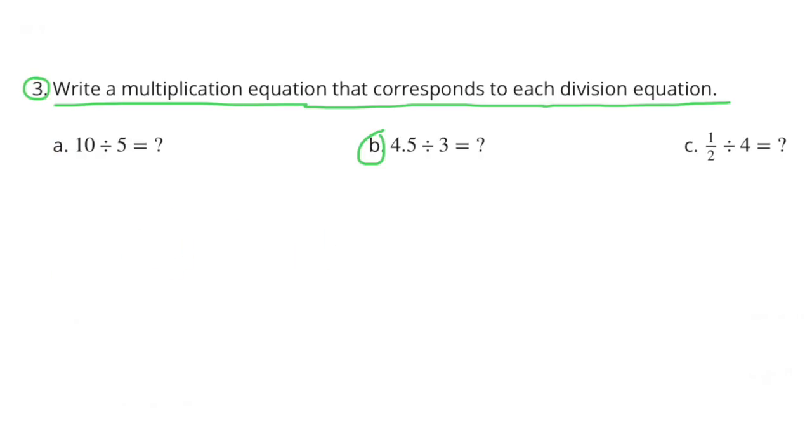B. 4 and 5 tenths divided by 3 equals what number? A corresponding multiplication equation would be what number times 3 equals 4 and 5 tenths?